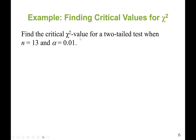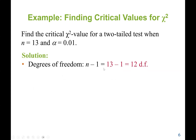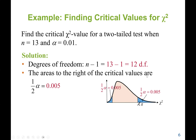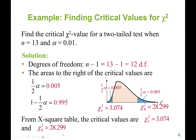Next, find the critical chi-squared values for a two-tail test when n is 13 and alpha is 0.01. The degree of freedom is 13 minus 1, giving us 12. The areas to the right of the critical values are half times alpha, which gives 0.005, and one minus half times alpha, which gives 0.995. From the chi-squared distribution table, the left-side critical value is 3.074 and the right-side is 28.299.